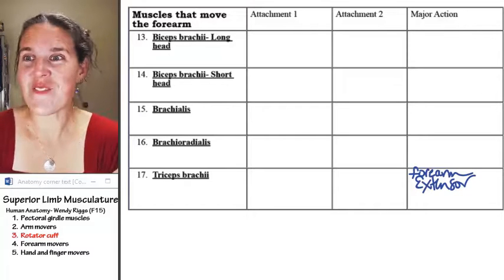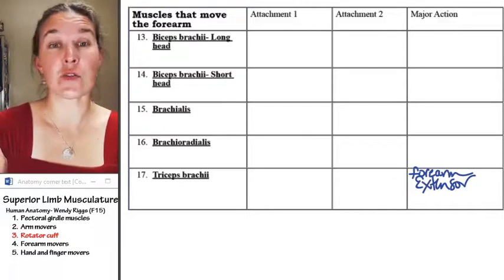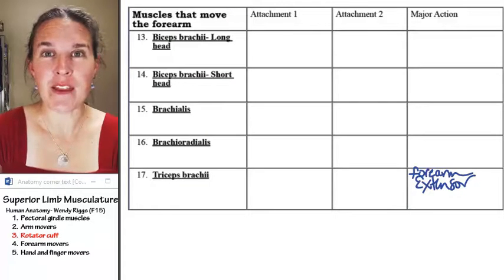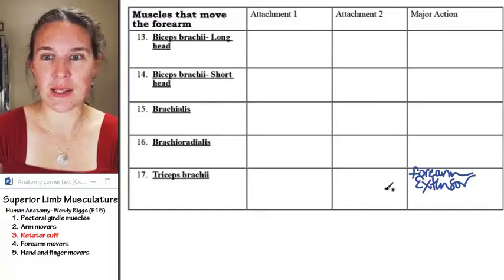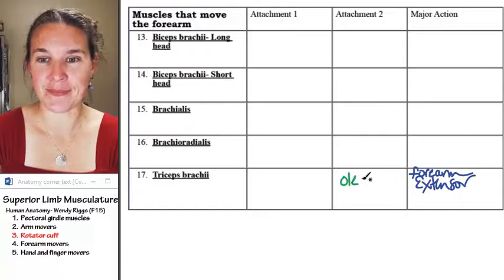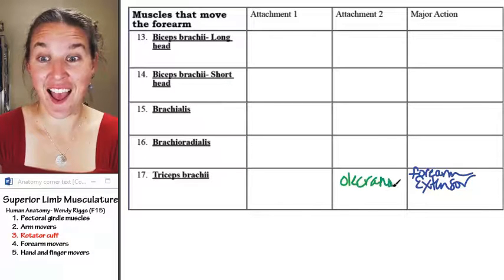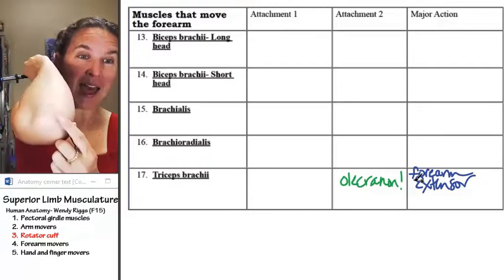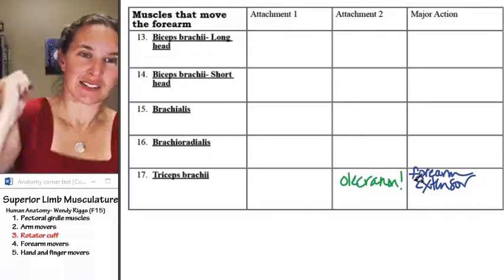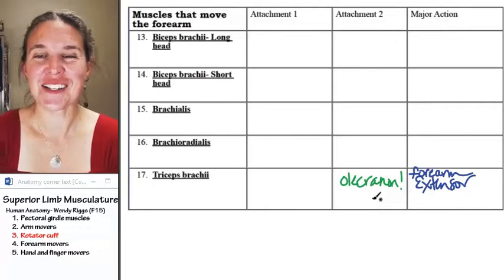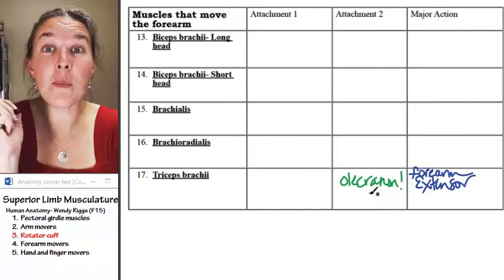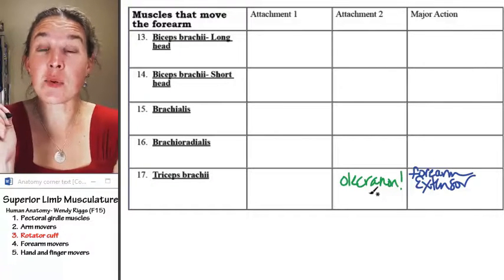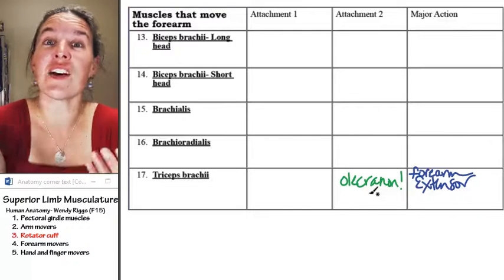And in fact, go ahead and take a wild guess. Those of you who know me quite well, it attaches to my favorite bone bump. What is it? It attaches to the olecranon. There it is. Don't make me mad, or that thing will be like, wah, wah. Yeah. So the olecranon is the elbow bone, elbow bump, that is found on the posterior surface of the ulna.